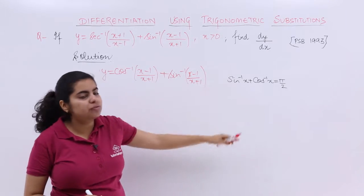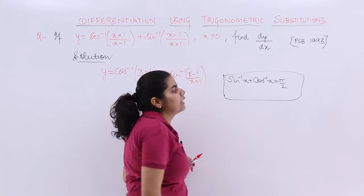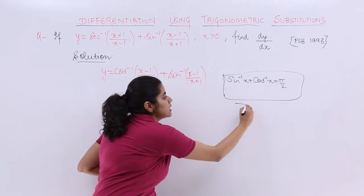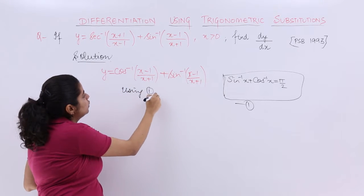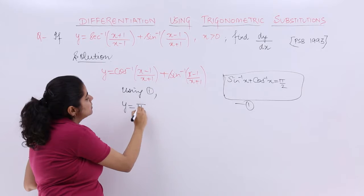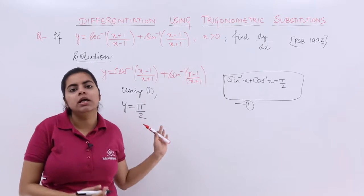Can we not apply this formula? Sin inverse x plus cos inverse x equal to pi/2. Yes, we can now apply this formula. Using this, my y becomes equal to pi/2 because the value of these two things in addition give me pi/2.